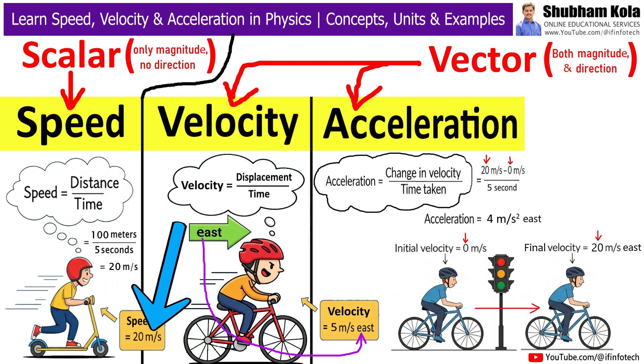The unit of speed can be meters per second or kilometers per hour. And because speed has only magnitude and no direction, it is a scalar quantity.